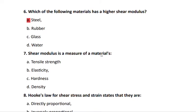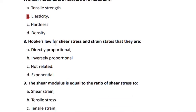Question 7: shear modulus is a measure of a material's elasticity. Steel has the highest shear modulus. If the material is highly elastic, it is more resistant to shear. Question 8: Hooke's law for shear stress and strain states that shear stress is directly proportional to shear strain.